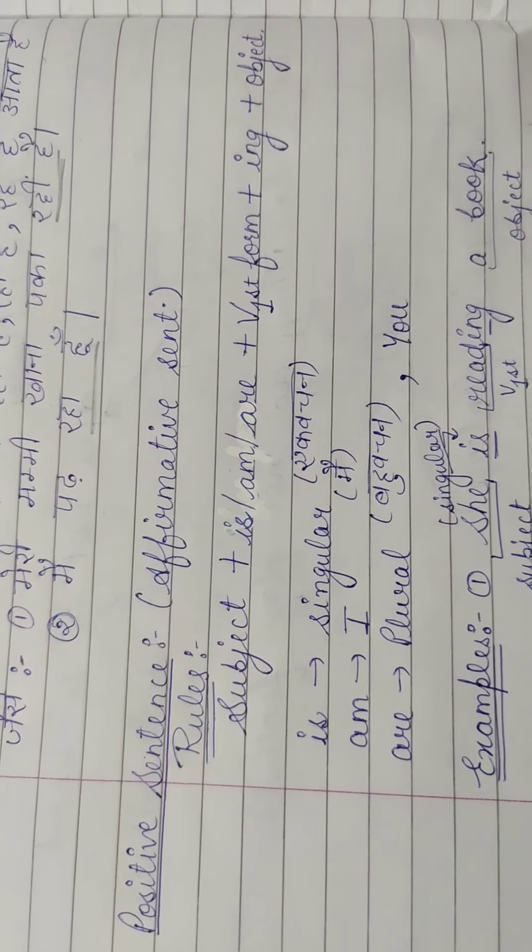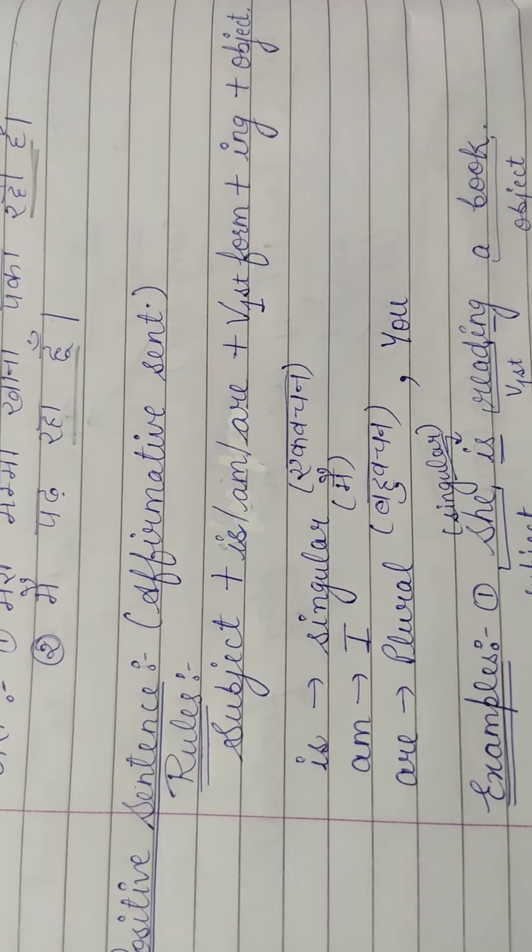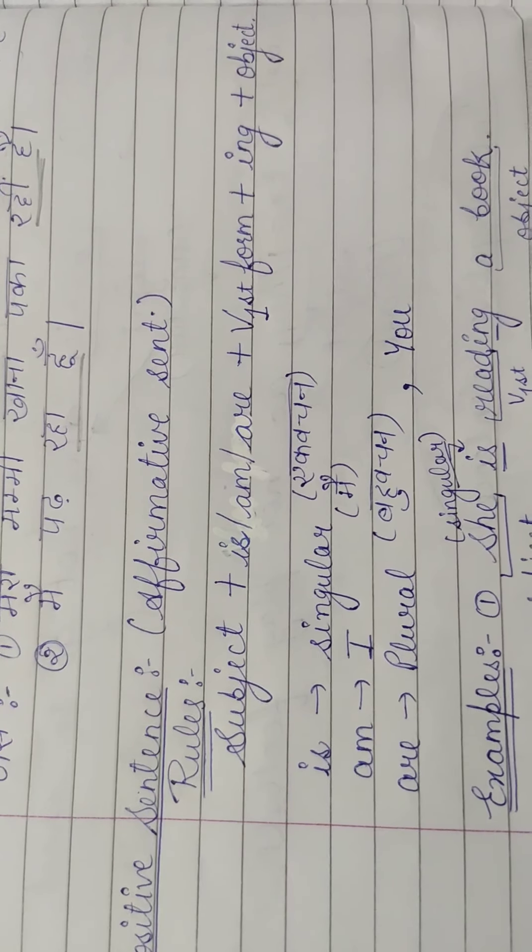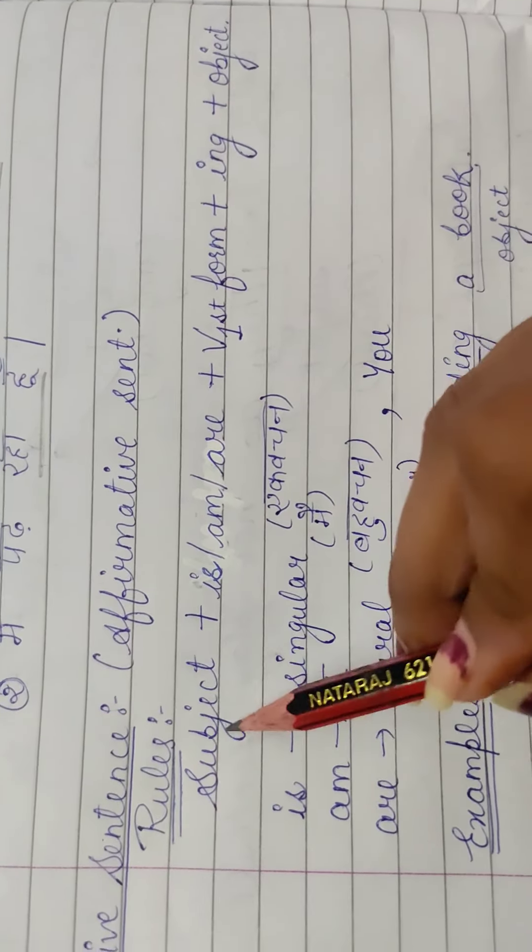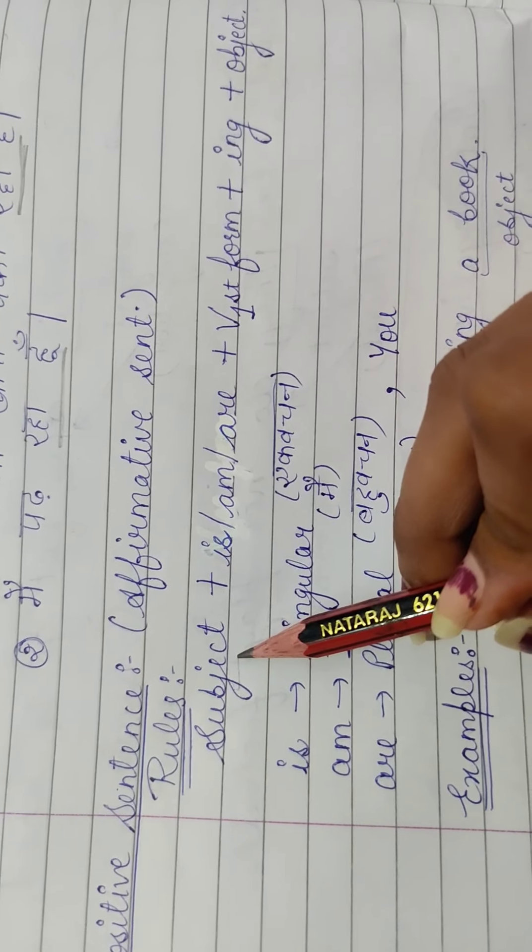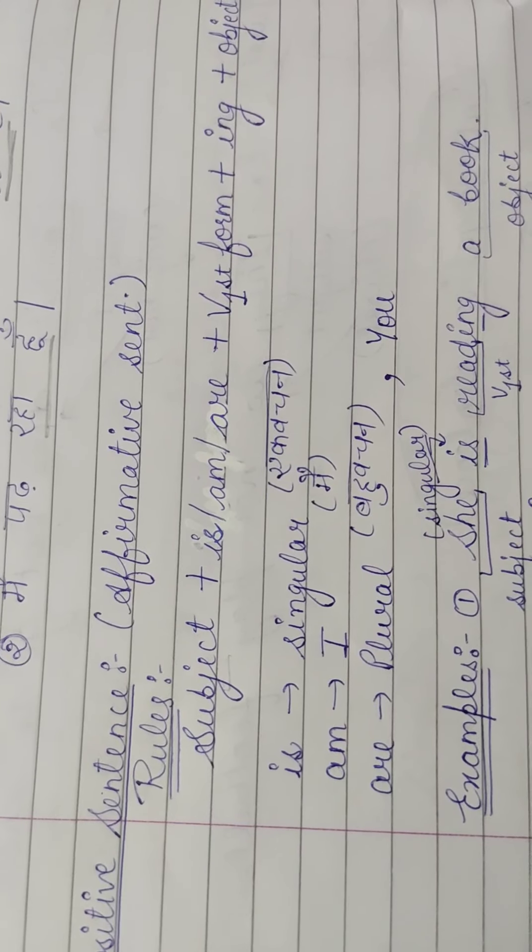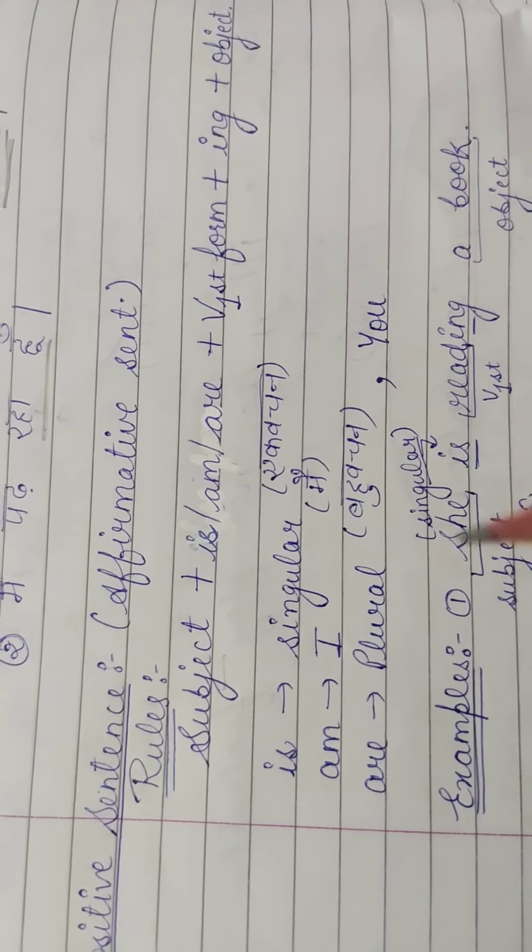So, hum padhengi ab rules. To sabse pahale hum padhate hai positive sentence ke liye. Joh simple sentence hotate hai, aapke affirmative bhi bohltai hai jinko. Iska rule kia hai? Sabse pahale aata hai subject, means karta. Karta koon hota hai? Karta kaam karne wala. To subject, jisei mai, tum, koi sa koi naam, jho kama kar raha hai, woh subject ho gya.